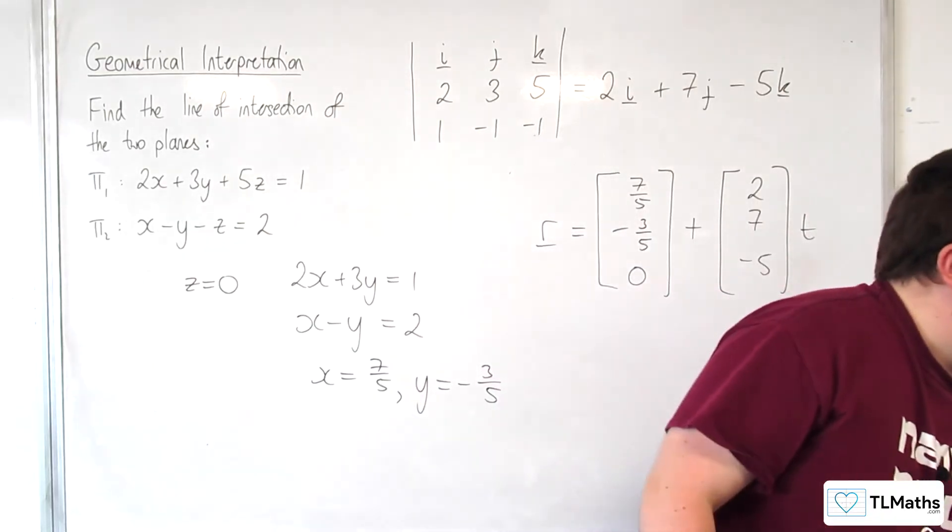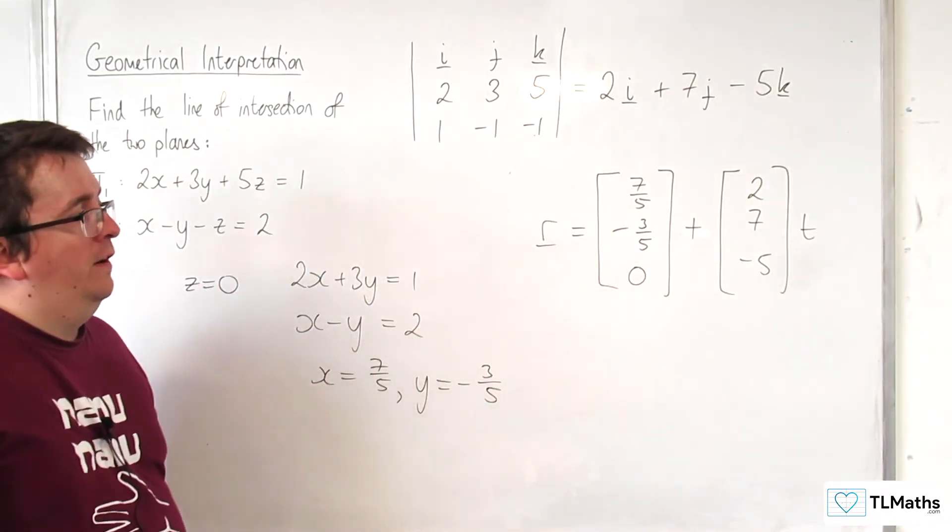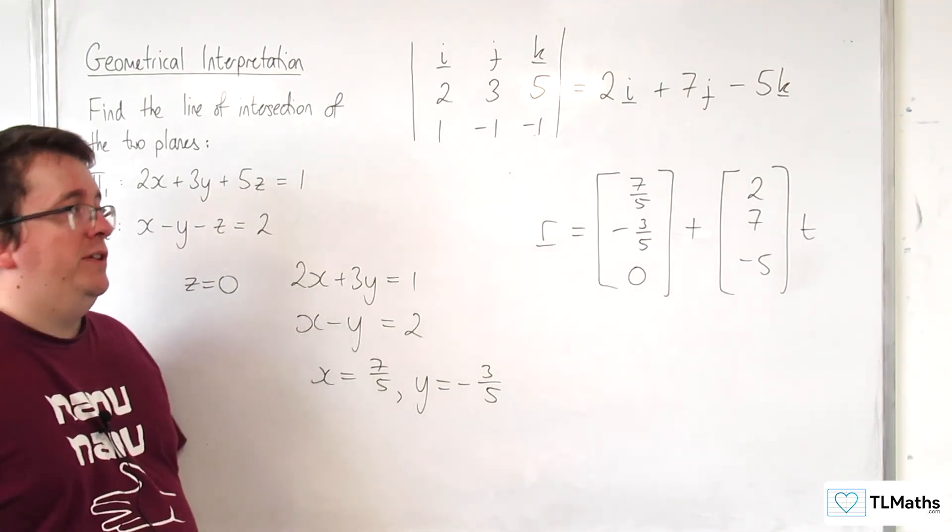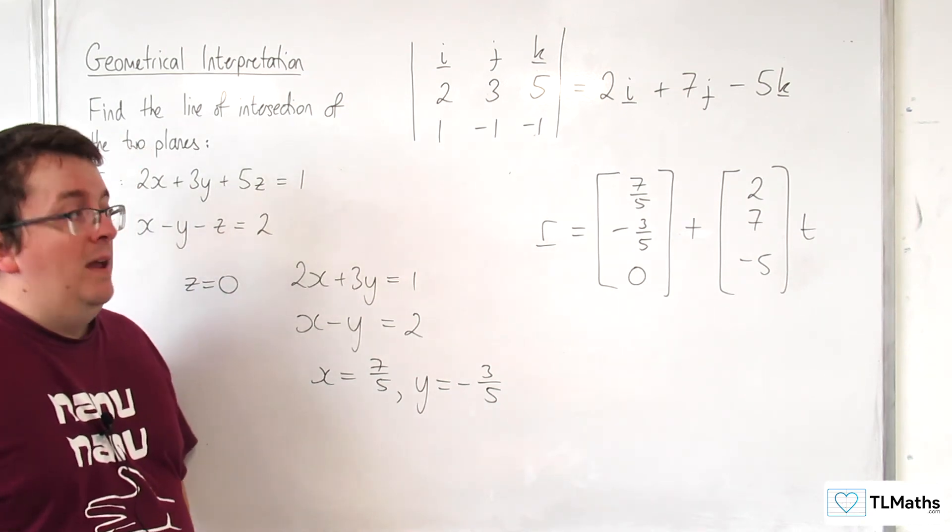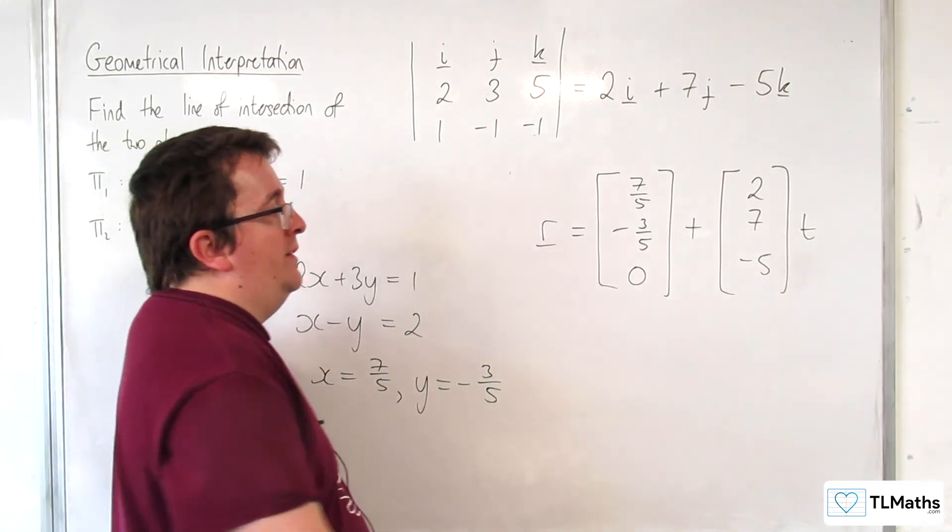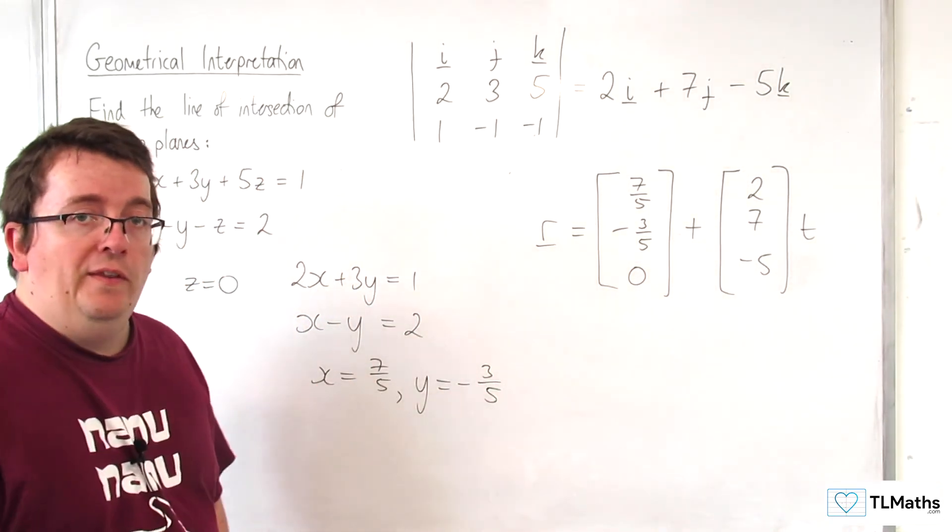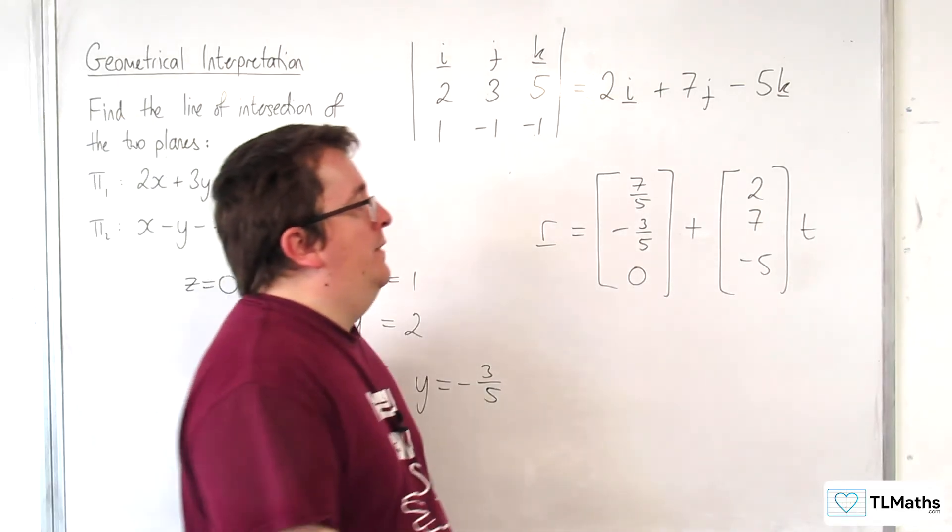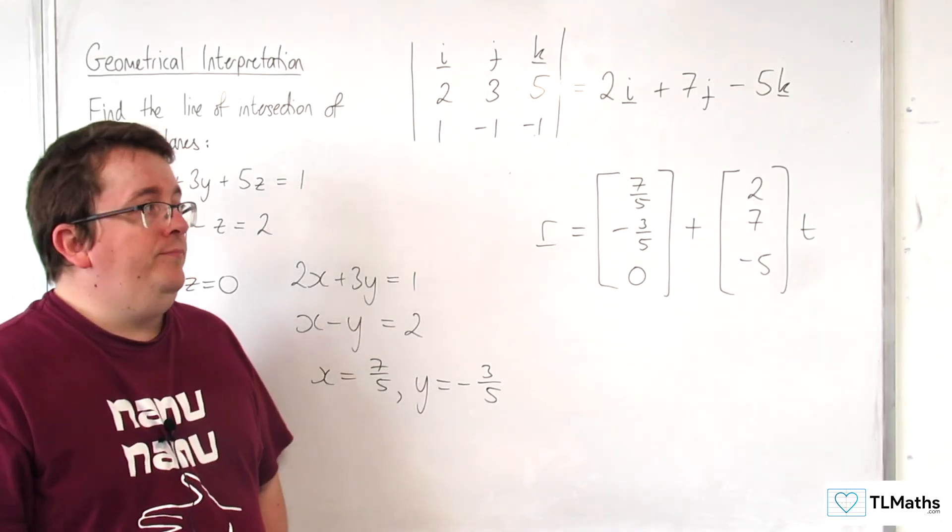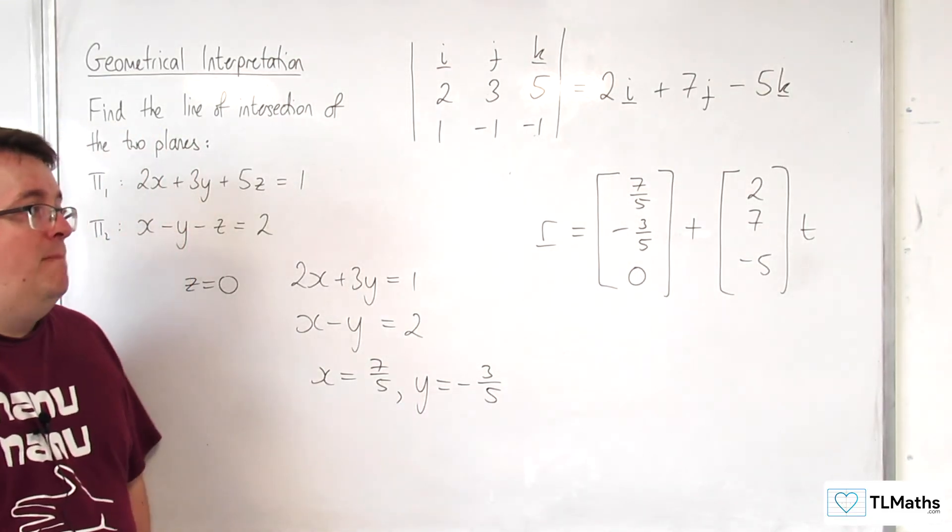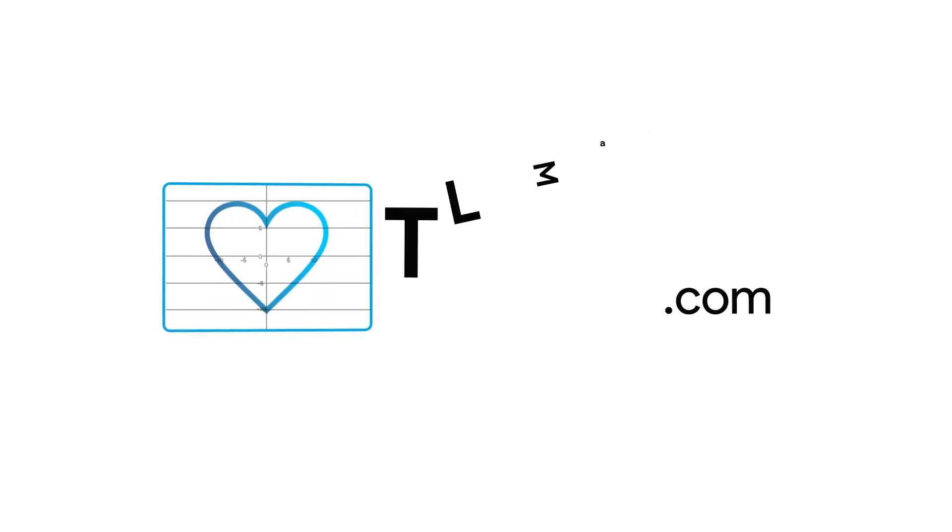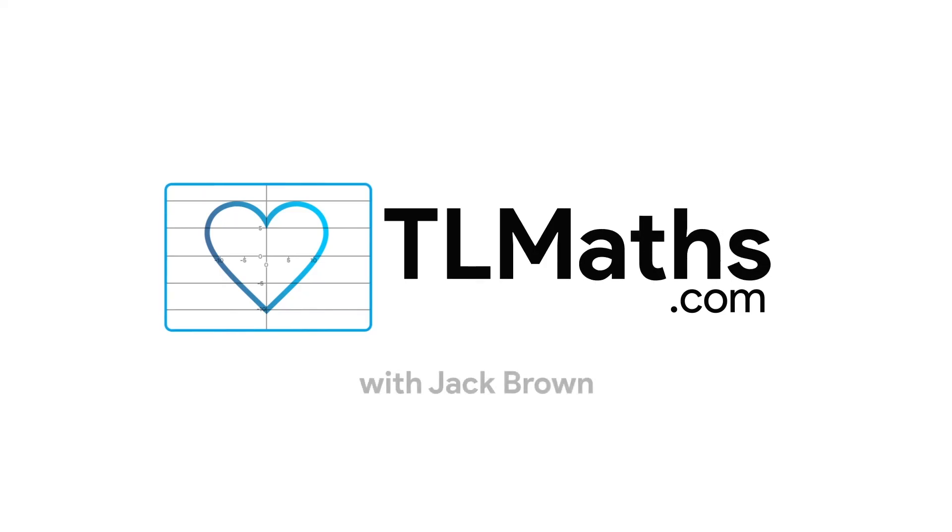And so this is the equation of the line of intersection of these two planes. Now you might notice that this looks a little bit different to the answer that we got in the previous video, but that's perfectly fine. What's different here is you could have a different position vector. You just need a different point that's on the line. That could be any point that's on the line. And the direction vector just needs to be a scalar multiple of the other one. So they may well look different, but they are describing the same line.